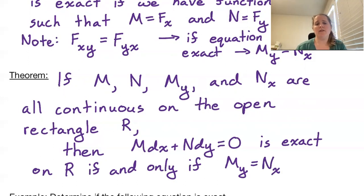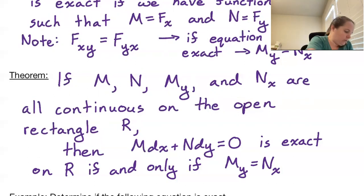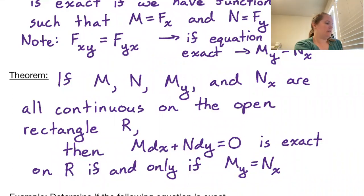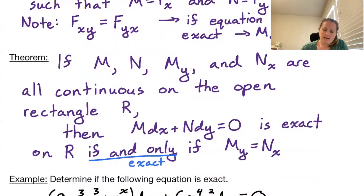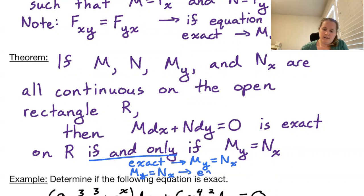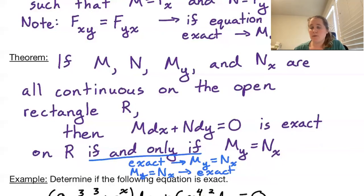Just a note: if and only if means the implication goes both ways. Exact implies this equality holds, and the equality holding implies exact. So this means that exact tells us the two partials are equal, and if the two partials are equal then the equation is exact. If we want to see if an equation is exact, all we need to do is check that those partials are equal to each other.